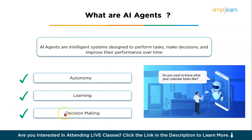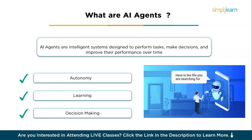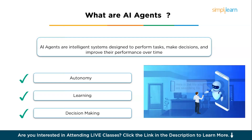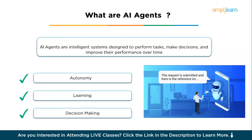Finally, we have decision-making. AI agents are designed to process information, analyze it, and make decisions — whether it's recommending products, providing customer support, or managing workflows. They can process vast amounts of data and make decisions that align with business goals or user needs. They don't rely on pre-programmed instructions; instead they apply logic and reasoning to make informed decisions, improving over time.